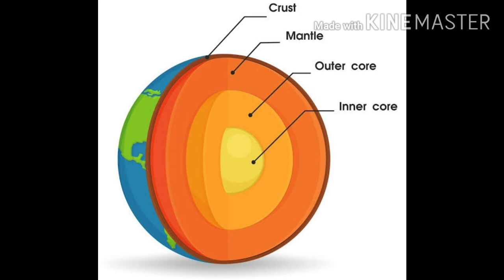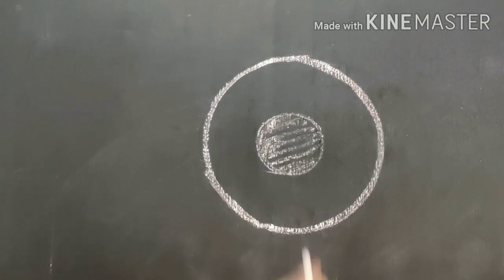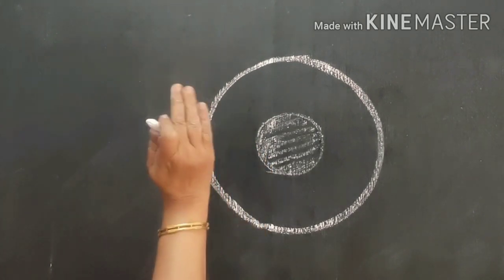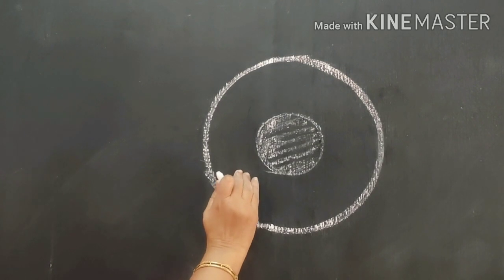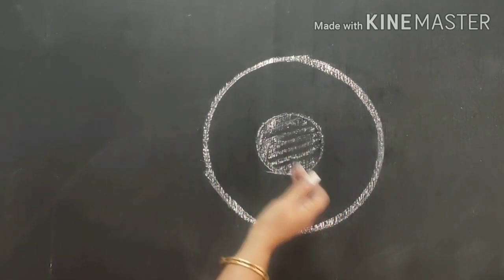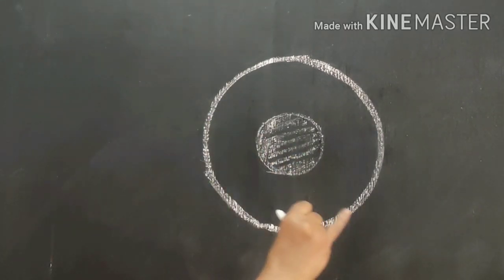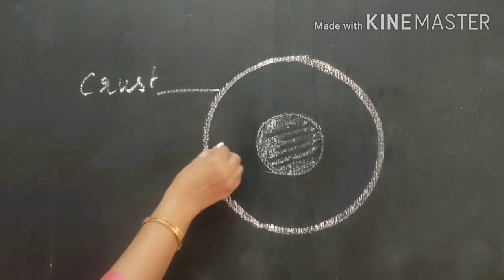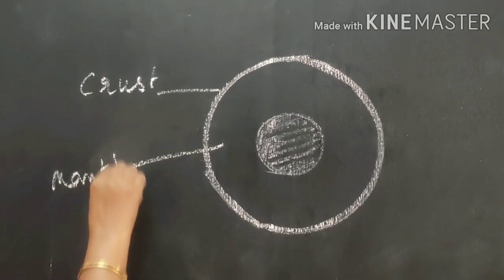Looking at a picture of the earth's structure, we can see the crust, the mantle, the outer core, and the inner core. On the basis of studying the physical properties of the earth's surface, behavior patterns of seismic waves, and lava emitted from volcanoes, it is believed that the earth is composed of three parts: crust, mantle, and core.